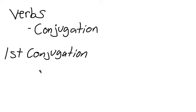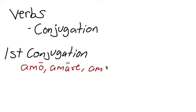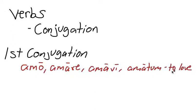First conjugation verbs are verbs that look like the verb amo. In our vocabulary we did principal parts for verbs, so the principal parts for amo would be: amo, amare, amawi, amatum — and amo means to love. All of the verbs in our chapter for first conjugation — amo, laboro, clamo — these all fit this pattern.